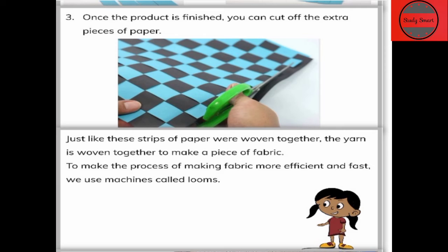The strips we used are actually representative of the yarn we prepared. Just as we weave the strips, we weave the yarn. After being woven together, the yarn makes a piece of fabric. As we see at the end, we get a product that looks like a mat structure — this mat structure is actually how fabric looks when it is completed.